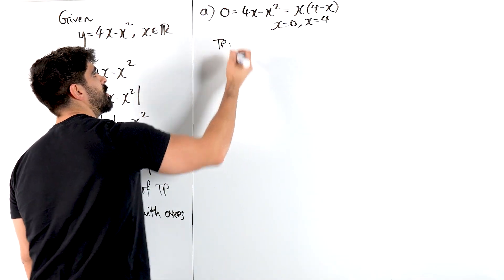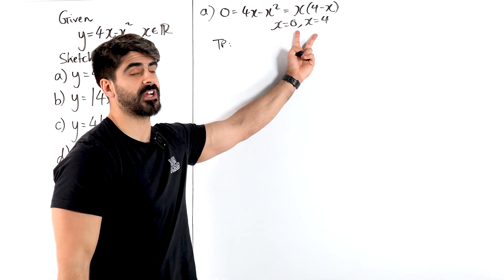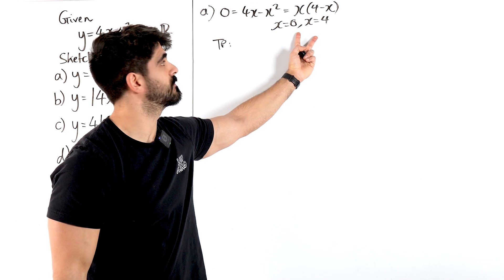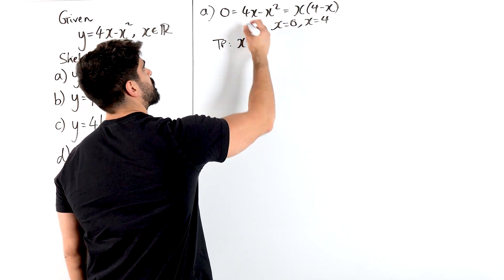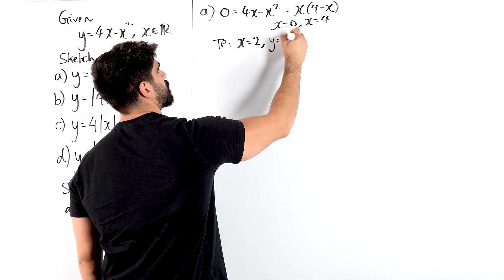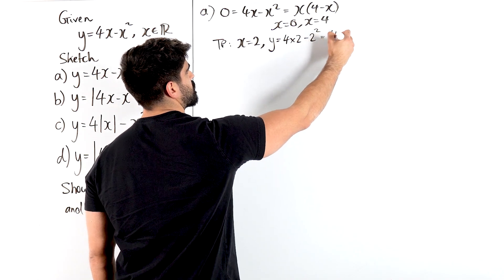Now in terms of our turning point, obviously there's different ways you guys can do this, but once you've found the roots for a quadratic, it's symmetrical about the roots. So it starts at x equals 2. Then we just sub it in. Y will be 4 times 2 minus 2 squared, which is 8 minus 4, which is 4.